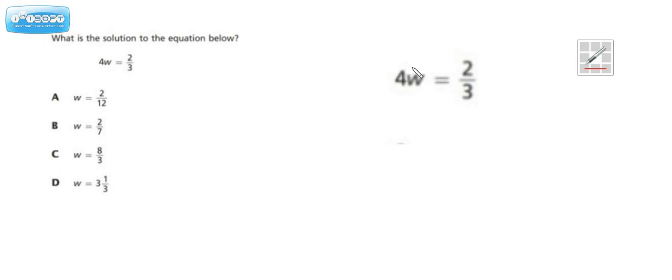Alright, so it's always a good idea to rewrite the equation in your workspace. And let's think about inverse operations. We want to do the opposite of whatever's happening to the variable. So what's happening to the variable? It's being multiplied by 4. What's the opposite of multiply by 4? Well, it's divide by 4.